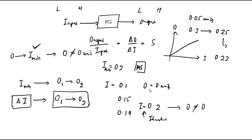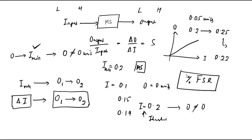Threshold and resolution are very important concepts. The numeric values I used were just to illustrate the concept — they can be different in practice. Threshold and resolution can be expressed directly in numeric values, but normally they are expressed as a percentage of full scale reading — the maximum scale reading of the instrument — as a percentage of that.